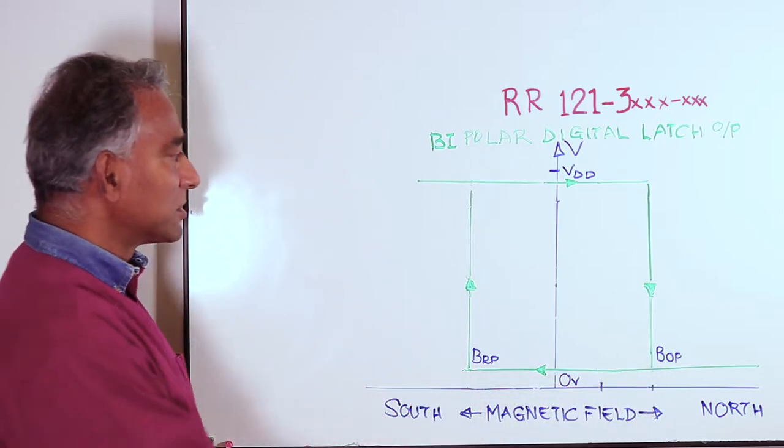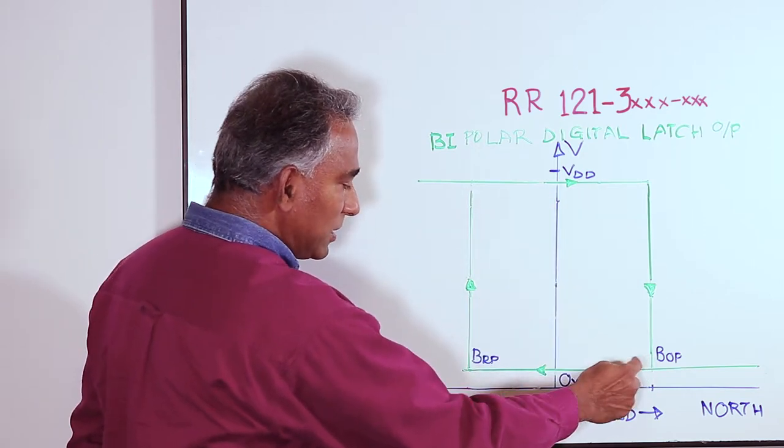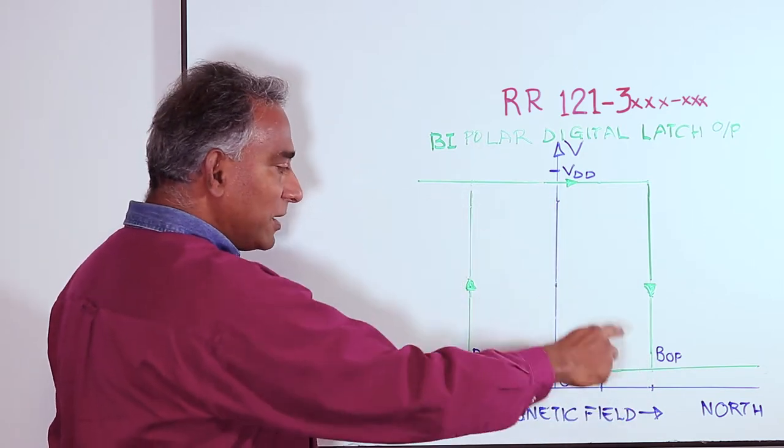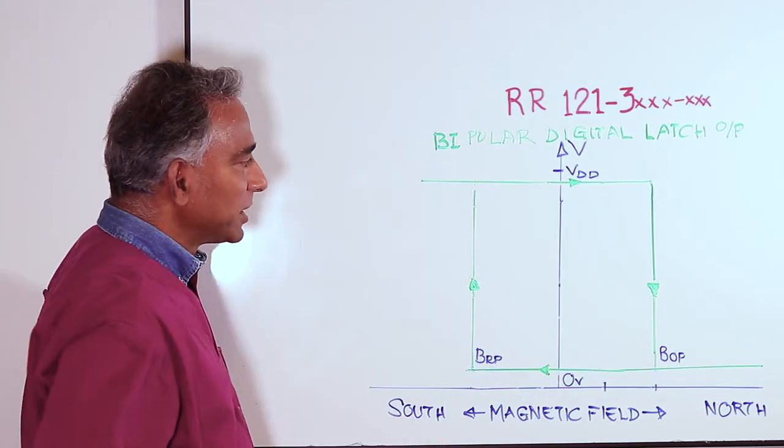where the magnet always follows a north pole with a south pole. Therefore, the output of the sensor alternately switches from off to on, and on to off, as the magnetic poles follow each other. This is very advantageous for a rotating machine,